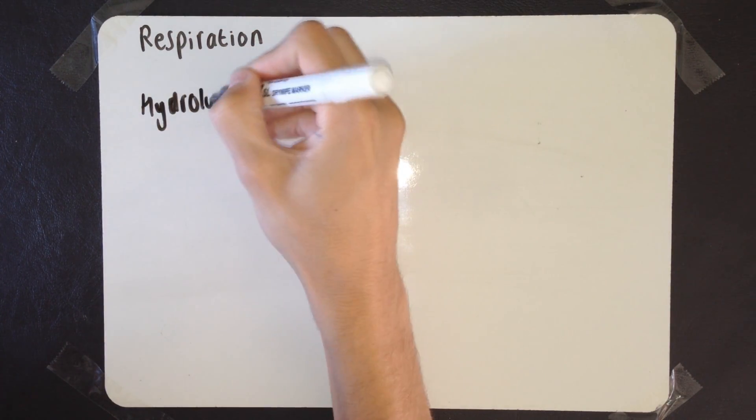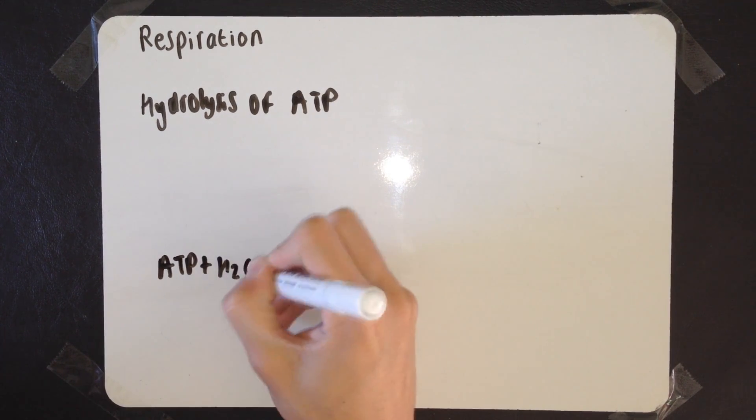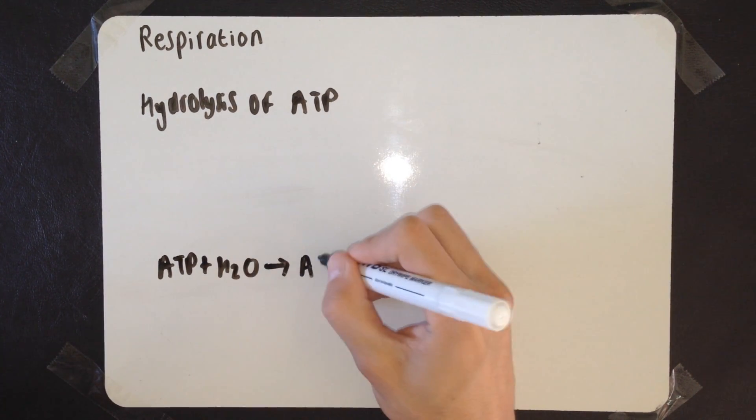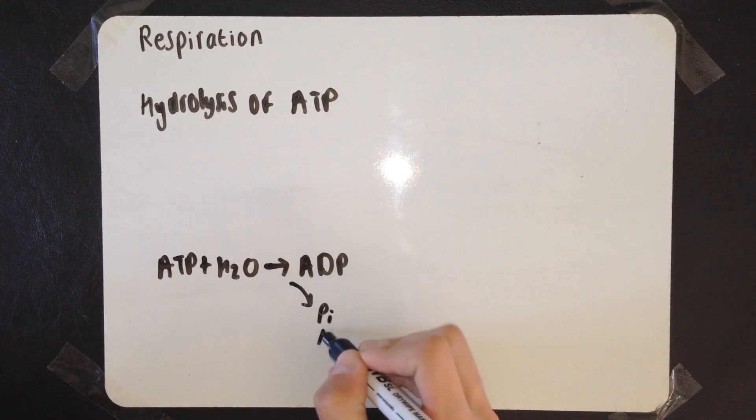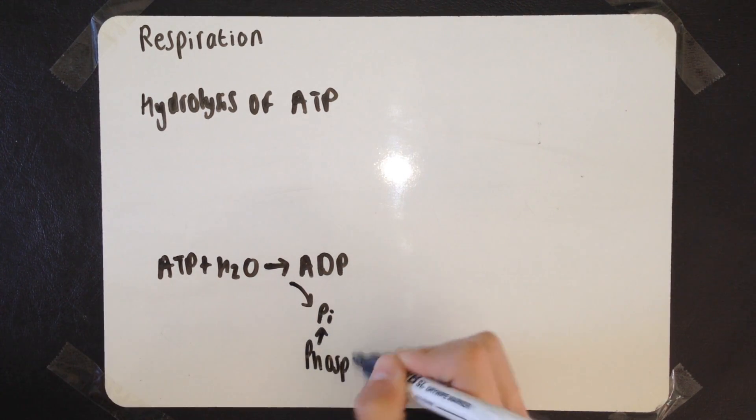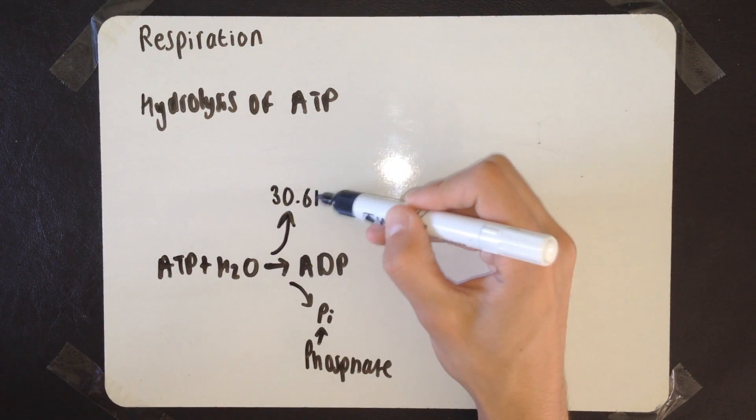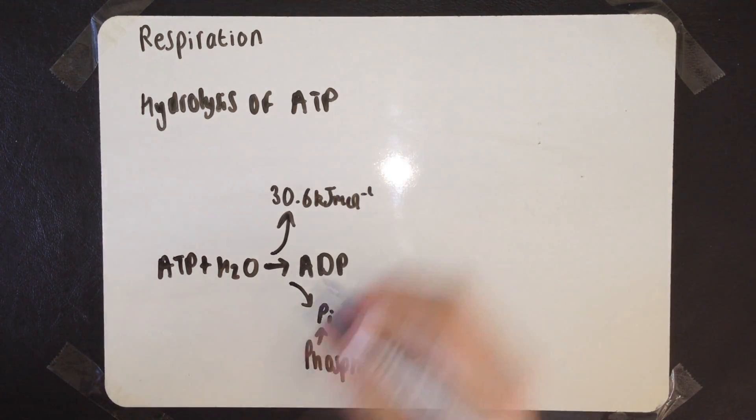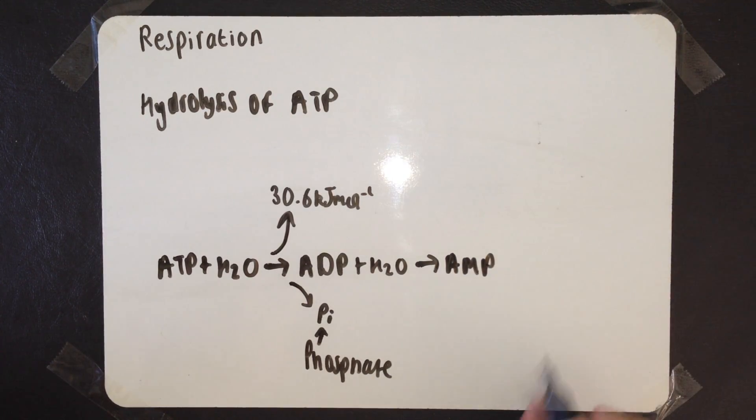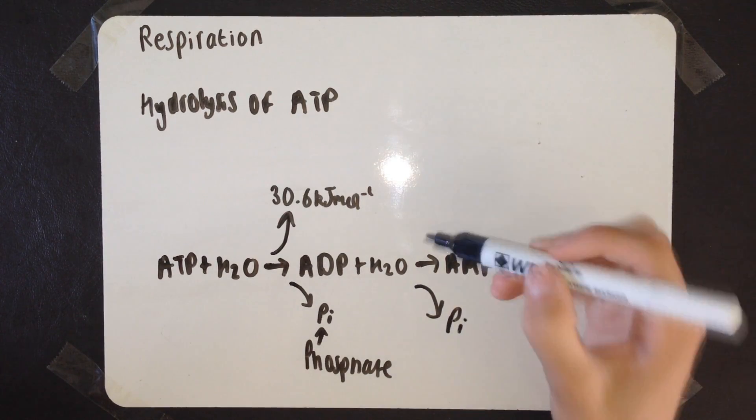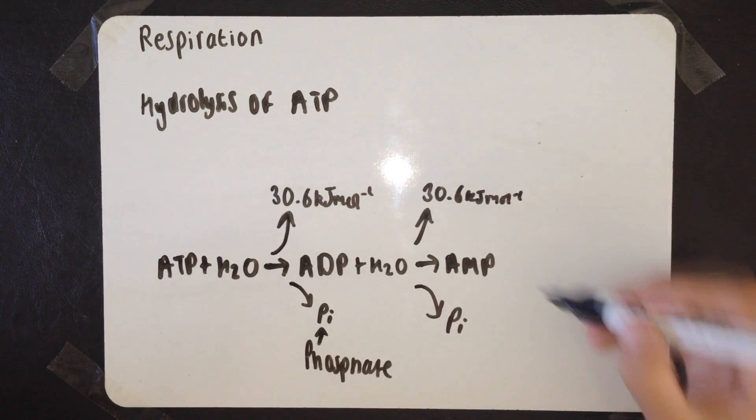We're going to quickly talk about the hydrolysis of ATP and how that releases energy to the body. When you have one molecule of ATP, adenosine triphosphate, and you hydrolyze it by adding water, you get one molecule of ADP, adenosine diphosphate. This leaves you with a phosphate group on its own, Pi representing the phosphate group, and this releases 30.6 kilojoules per mole of energy. Once again, when hydrolyzing ADP this time, you get AMP. That goes from adenosine diphosphate to adenosine monophosphate. Once again, 30.6 kilojoules per mole of energy is released.